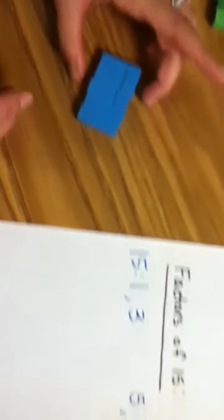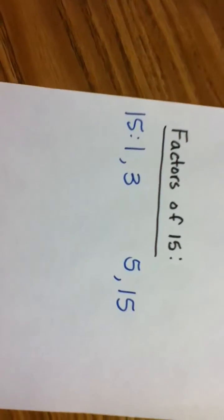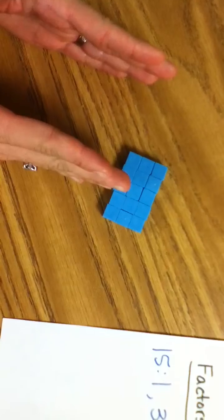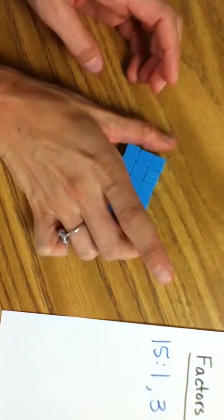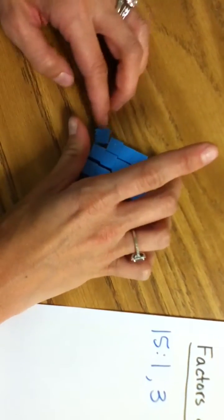On my factor list, though, I've already listed 5 and 3, so do I need to list it again? No, ma'am. No, but I do have another array to do it. So, so far we had 1, 2, 3 different ways, okay?